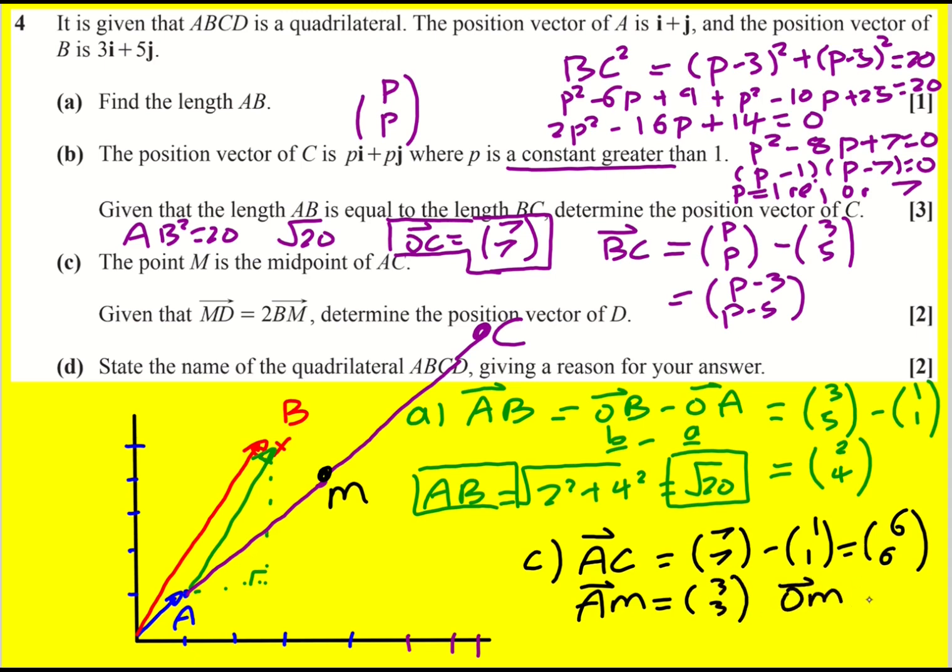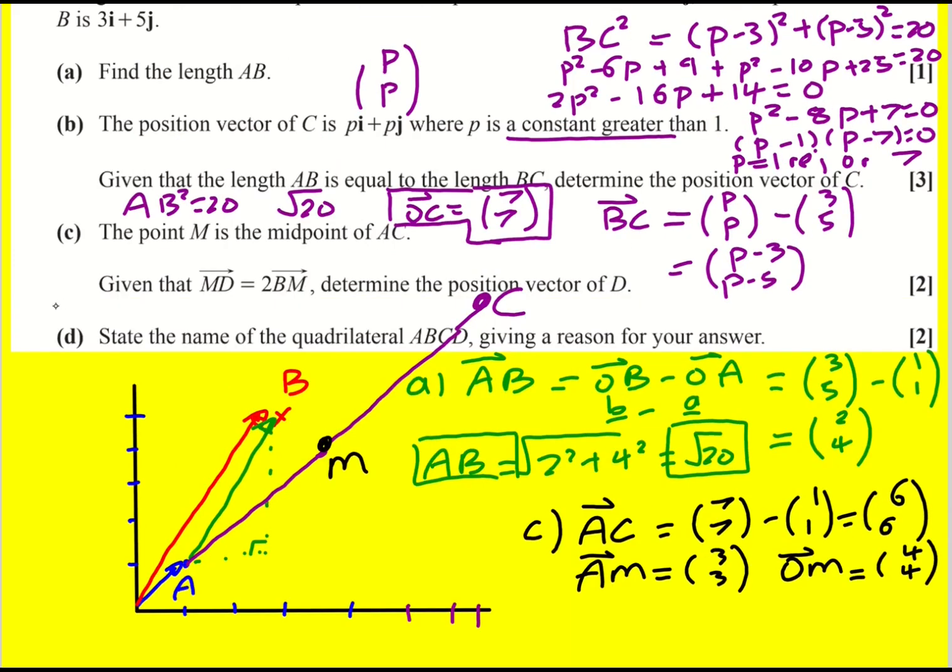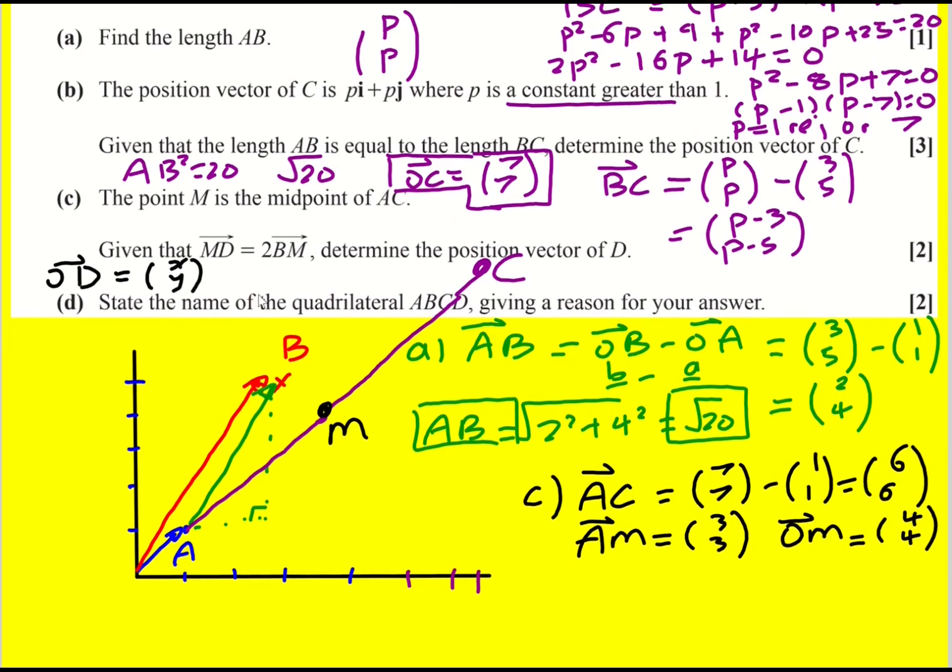And that means that OM, the position vector of m, is going to be OA plus AM. So it's going to be 1, 1 plus 3, 3. OM is 4, 4. All right, now I'm going to say that the position vector of d is just x, y for the moment. And that's what I'm going to be aiming to find.